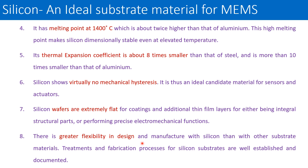There is greater flexibility in design and manufacture with silicon than with other substrate materials. The treatments and fabrication processes for silicon substrates are well established and documented. It has various advantages: highly stable structures, high melting point, low thermal expansion coefficient, and no mechanical hysteresis. These properties make silicon the most ideal substrate material for MEMS fabrication.